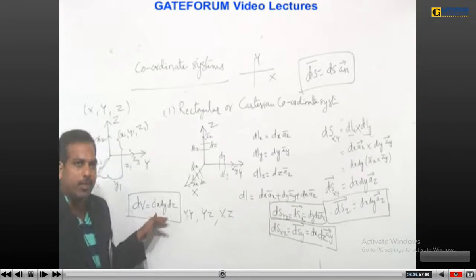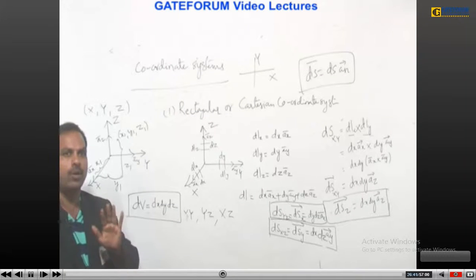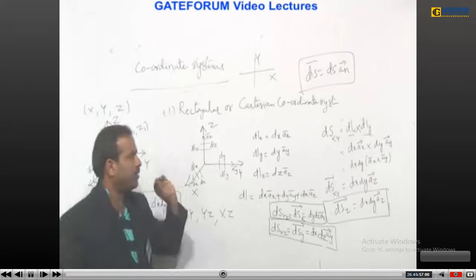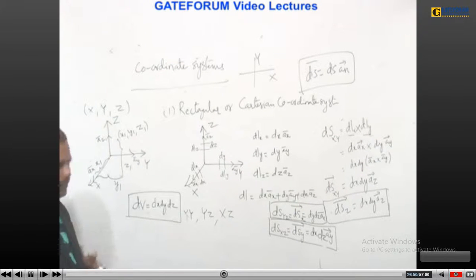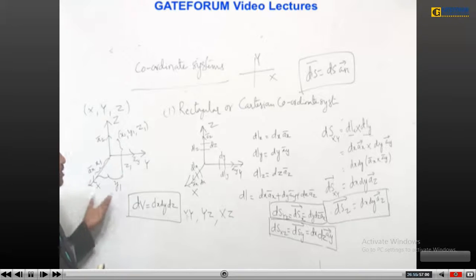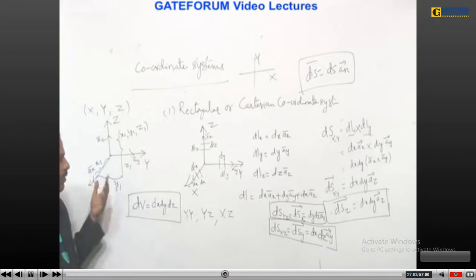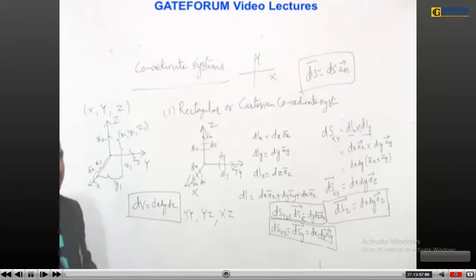To conclude the rectangular coordinate system: the coordinates are x, y, z. Any point in this system can be located similar to the two-dimensional case. To locate point (x1, y1, z1), one travels x1 units along x, y1 units along y, and z1 units along z.